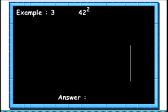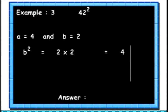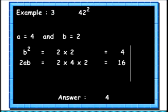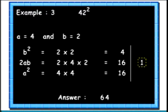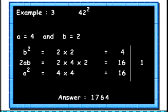Let's see another example. Here we will find out the square of the number 42. Again we split the number as A and B — A is 4 and B is 2. First we find the square of B: square of 2 is 4. We take this 4 to the answer. Then we find 2AB: 2 into 4 into 2 equals 16. We take the 6 to the answer and carry forward 1. Then we find the square of A: square of 4 is 16. We add the carried 1 to get 17. We take this to the answer. So we get the final answer as 1764.